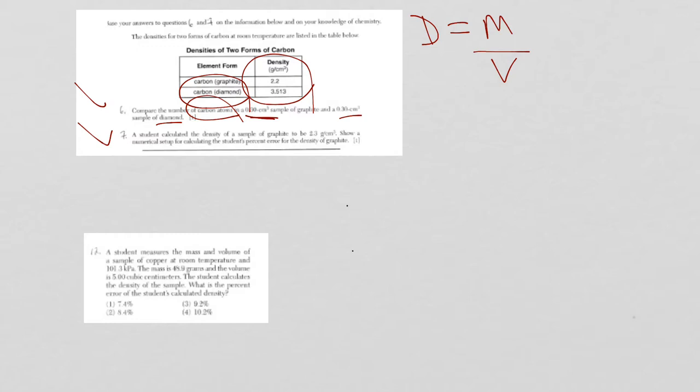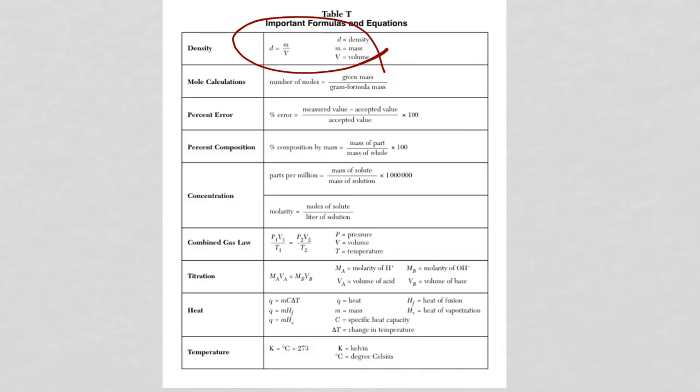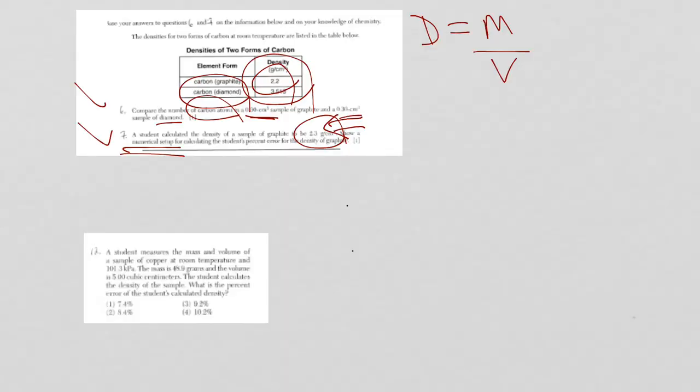So, a student calculated the density of the sample of graphite to be 2.3 grams per centimeter cubed, show a numerical setup for calculating percent error. So, this, of course, is the student value here. The true value, or known value, is on the table. Now, the percent error formula is on the reference table. So, I would suggest writing it down and plugging in, especially, of course, even at times by 100, because it's percent, and they want the numerical setup anyway.